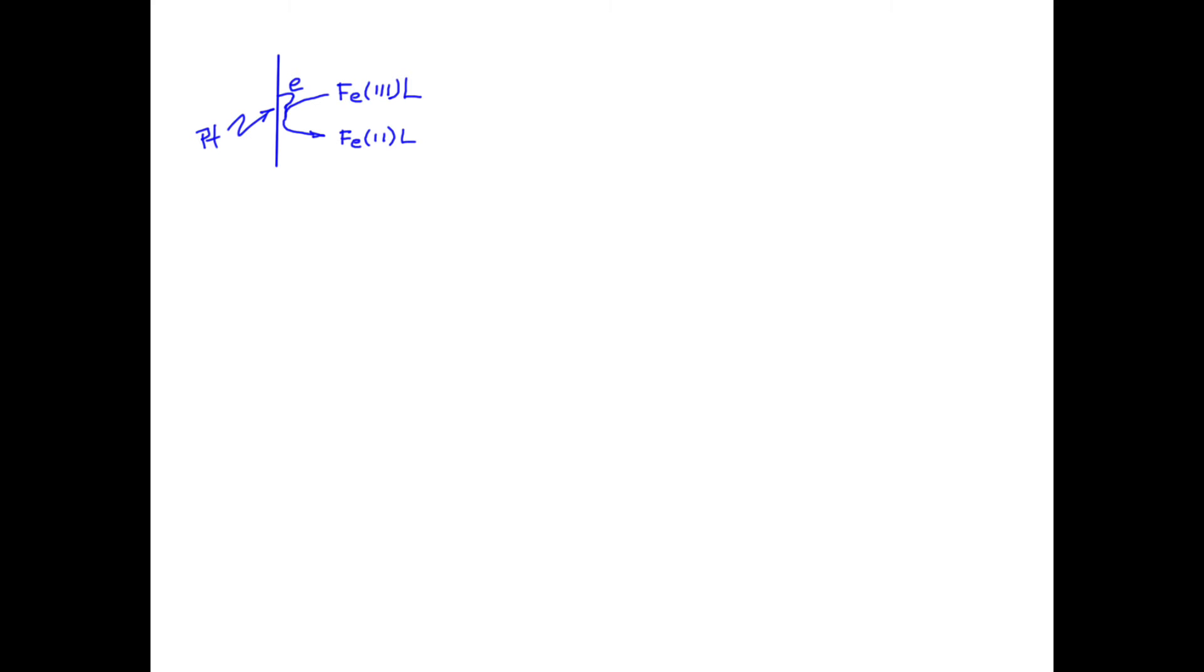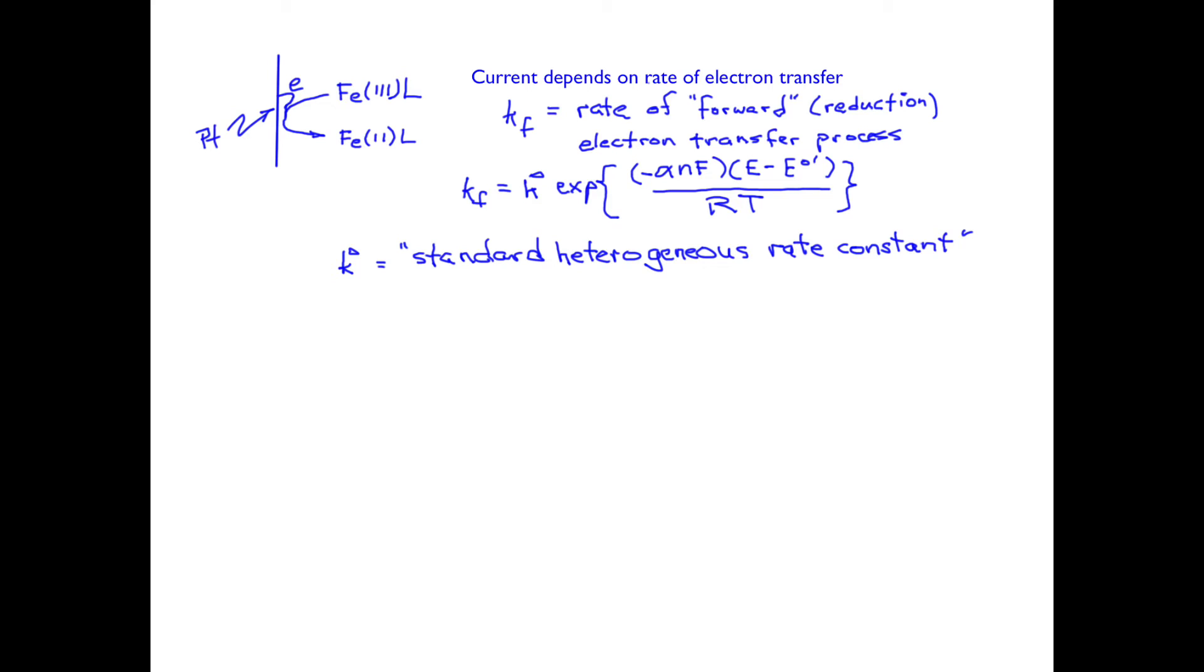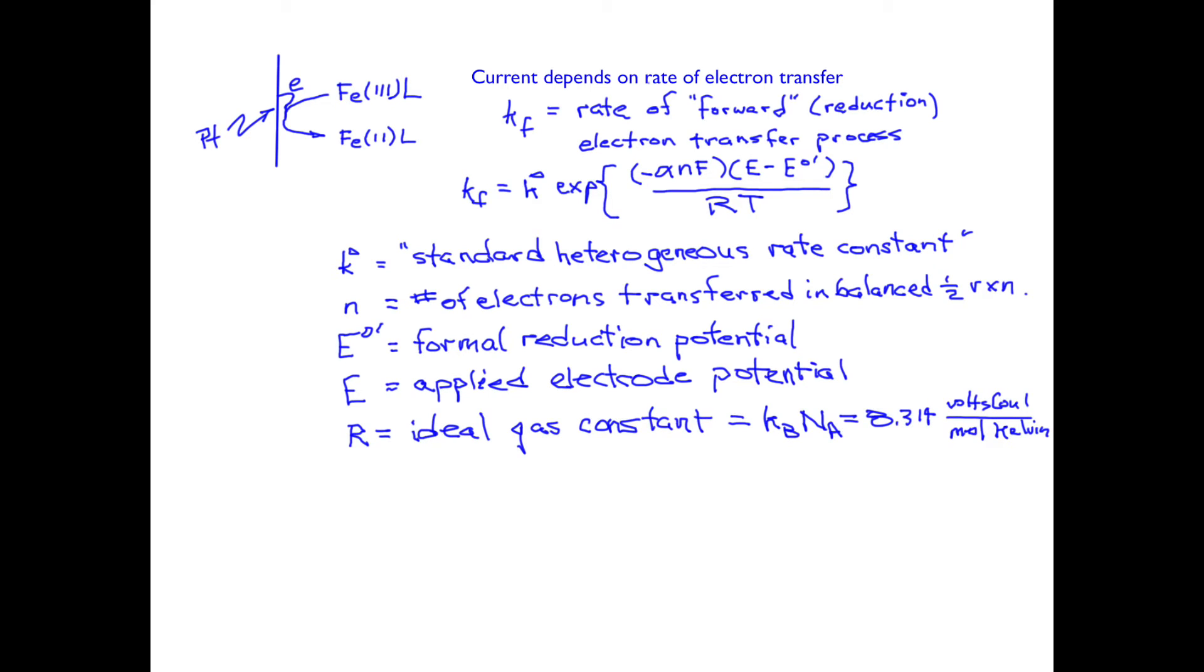Current is measured in coulombs per second, so it represents a rate measurement. The rate constant for the reduction process is an exponential function of the applied voltage to the electrode. K0 is called the standard heterogeneous rate constant. It is merely the value that the rate constant would have at a particular standard state that we arbitrarily choose, that being when the applied voltage is set equal to the formal potential for this reaction. N is the number of electrons that are transferred in the balanced half-reaction. E0' is the formal potential for the electron reaction, and E is the voltage we're imposing from an outside circuit on the electrode. R is the ideal gas constant. The temperature here is in kelvins.